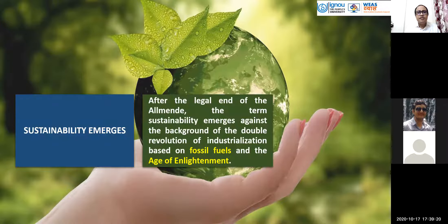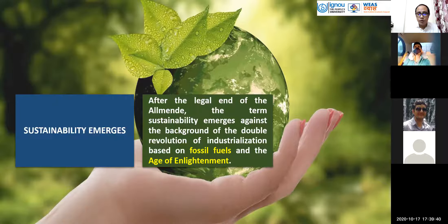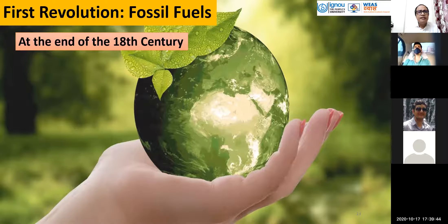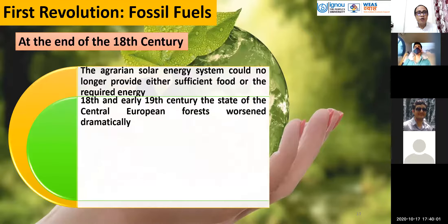After the legal end of the Allmende, the term sustainability emerged against the background of the double revolution of industrialization based on fossil fuels and the Age of Enlightenment. At the end of the 18th century, seeking an alternative to agrarian energy systems, Europe's forests declined dramatically.